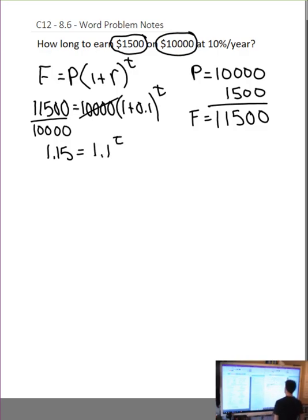And I get 1.15 is equal to 1.1 to the t. Now, I could put this into my graphing calculator. I could do guess and check like we did the last chapter, but I can't do change of base, so I have to use logs. In the notes, I've arbitrarily logged both sides, brought my exponents down in front, divided both sides, and changed its base.